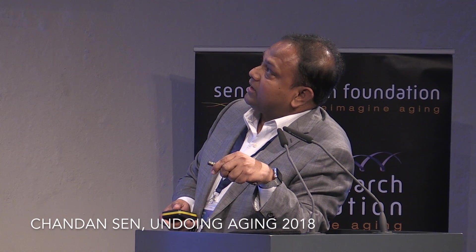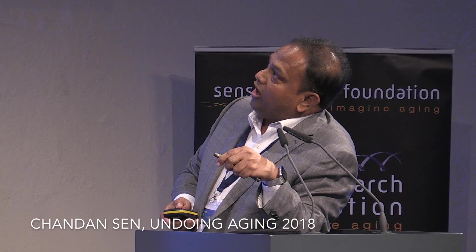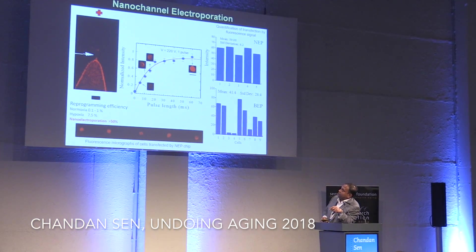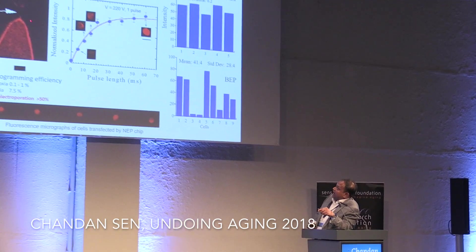We open up a very small window within the cell — no more than two percent of the membrane. The transfer is highly controlled: we open a port, we can close it when we want, and we deliver exactly what we want without injuring the entire membrane. That is the key difference between bulk electroporation and our technology.